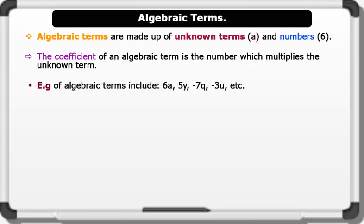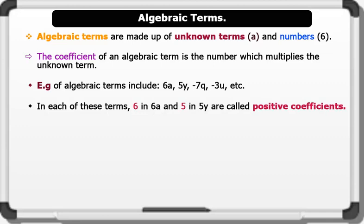Examples of algebraic terms include: 6A, 5Y, minus 7Q, minus 3U, etc. In each of these terms, 6 in 6A and 5 in 5Y are called positive coefficients. And A, Y, Q, and U are called unknown terms.